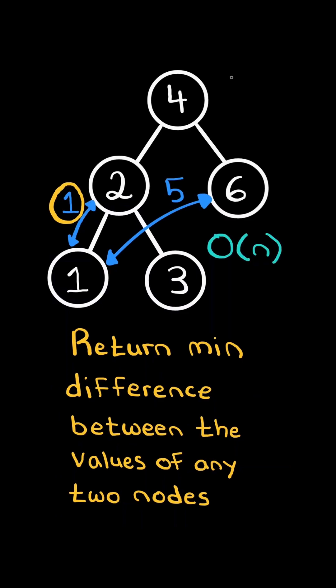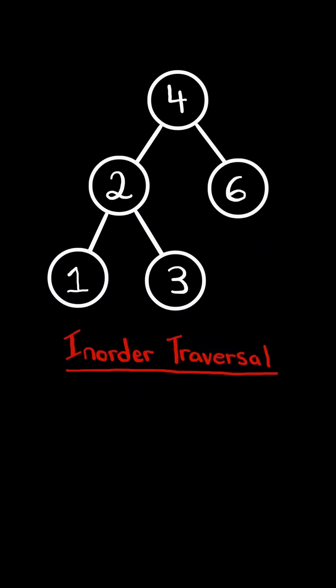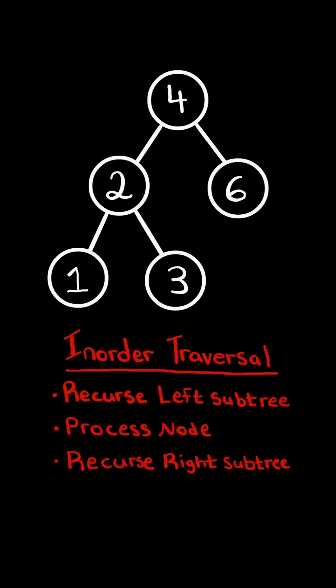We will solve this in O(n) time. We will first traverse the tree using an in-order traversal. In an in-order traversal, we first recurse on the left subtree, then we process the node, and finally recurse on the right subtree.